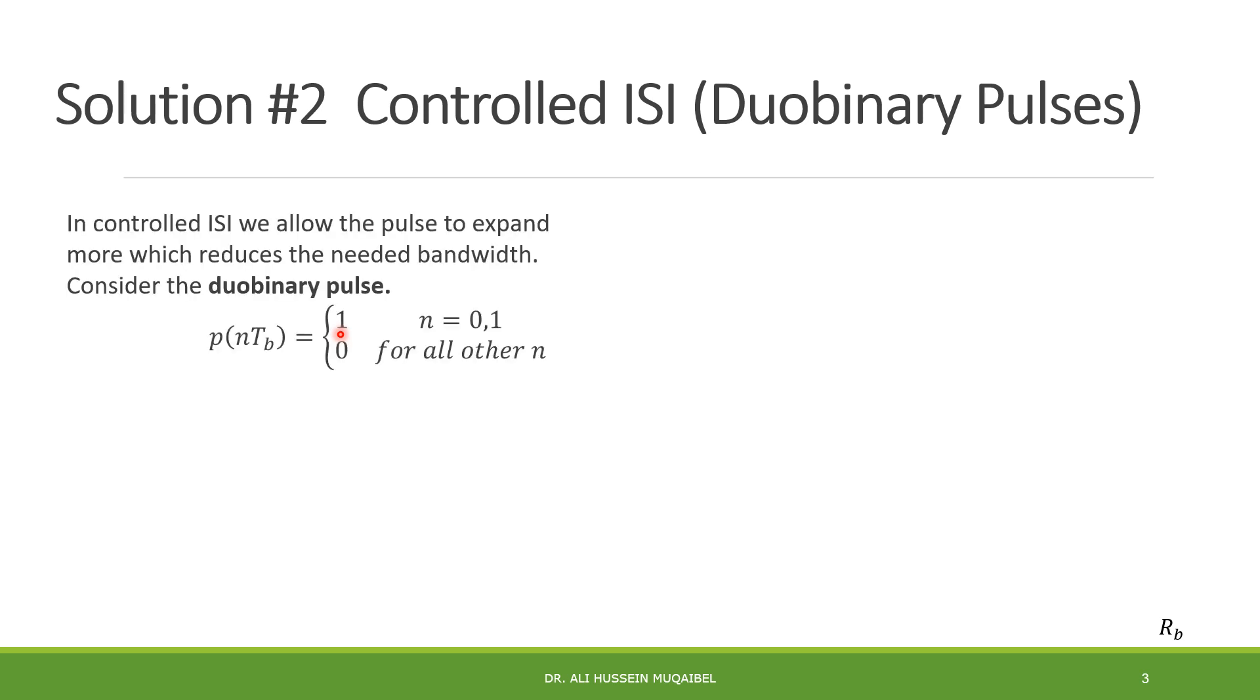In controlled ISI, we're not eliminating the ISI. Instead, we are making ISI worse. Usually, the criteria for zero ISI is to have 1, or response at the pulse of interest, which is usually n equals 0, and we should have 0 for all other instances or all other symbols. Now, what we did here, we said we'll get 1, not just at the pulse of interest or the bit of interest, we'll get also at the next bit. So we're introducing the ISI under control. And this is called duo, because we have 2.